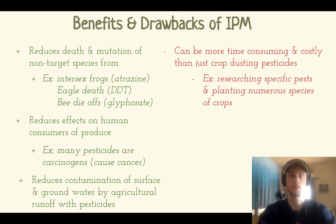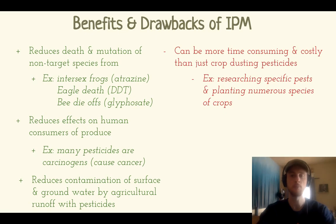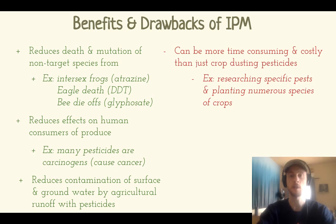The main drawback of IPM is that it is quite time-consuming and can be costly. You often have to conduct research and actively monitor pest populations rather than just selecting a broad pesticide and crop dusting — flying over your fields with a small airplane. It takes more time and oftentimes more money to get it established.